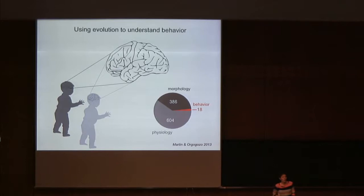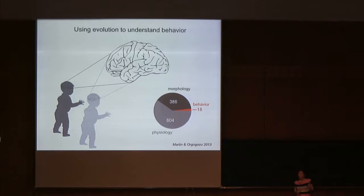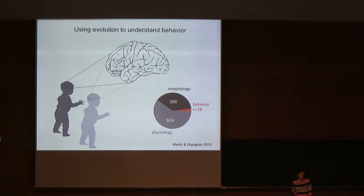It's untapped because there are very few studies of the genetic basis of behavioral changes. A literature review published a few years ago catalogued all cases where researchers had convincingly linked changes in a specific gene to a change in any type of trait — behavioral, morphological, or physiological. Out of over a thousand examples, only 18 underlie behavioral traits versus hundreds associated with morphological or physiological evolution. We really know very little about the genetic changes that underlie behavioral evolution.